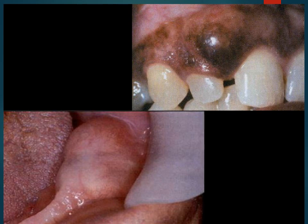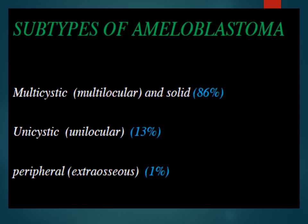While ameloblastoma is most common in the posterior region, there is also an anterior ameloblastoma, though the posterior mandible is most popular. There are three subtypes: multicystic/multilocular, which constitutes 86%; unicystic/unilocular, which consists of 13%; and peripheral/extra-osseous, which constitutes only 1%.